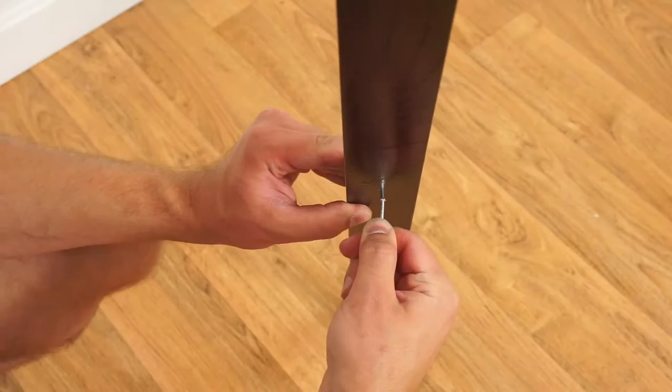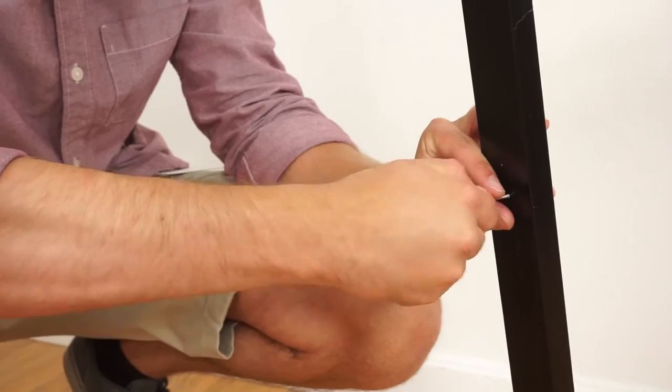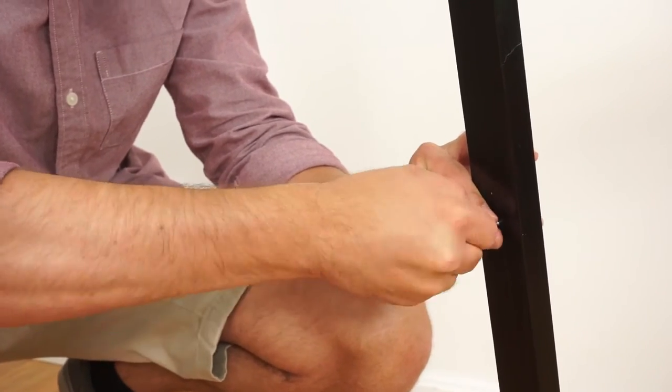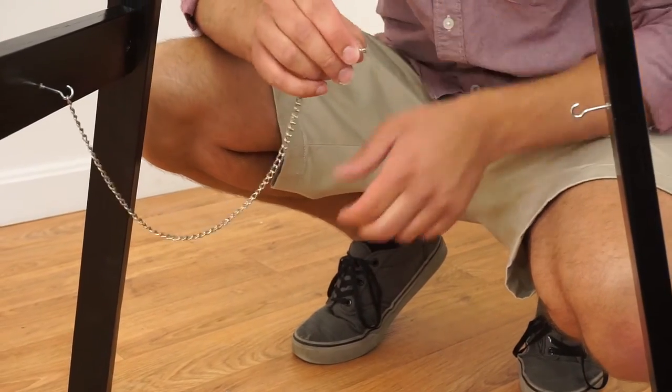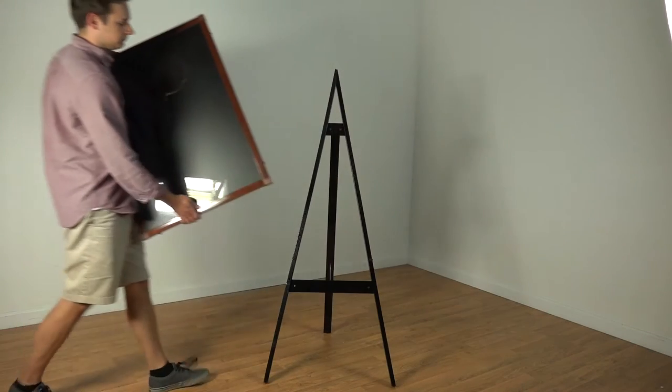Repeat this step with the inside part of the easel's back leg. Then connect these two hooks with the included chain. Now your easel is ready to be used.